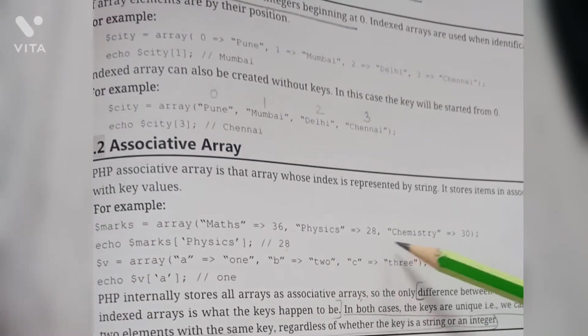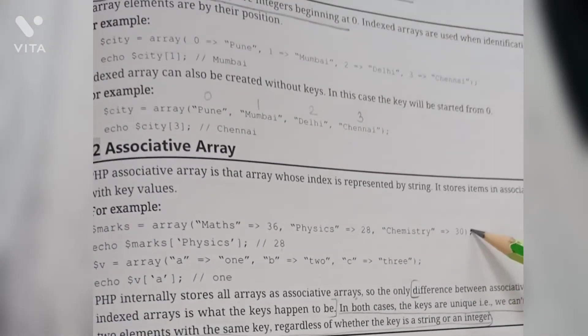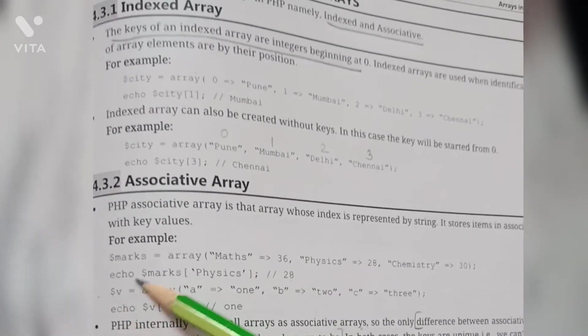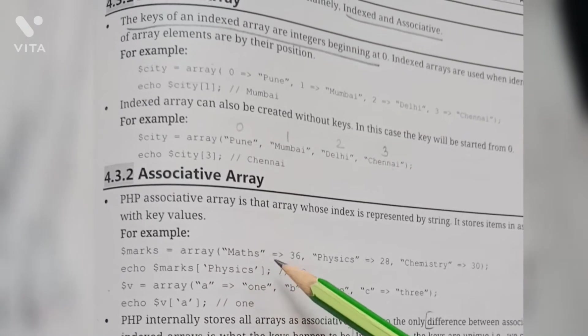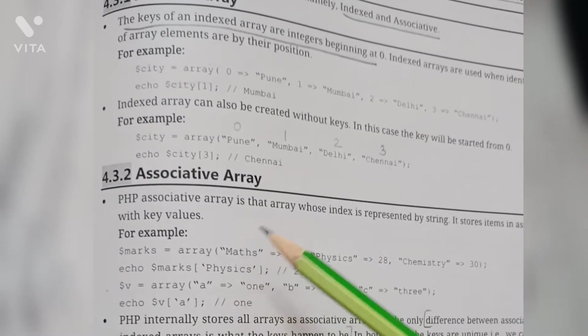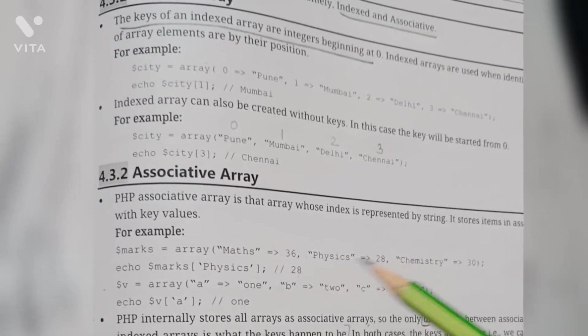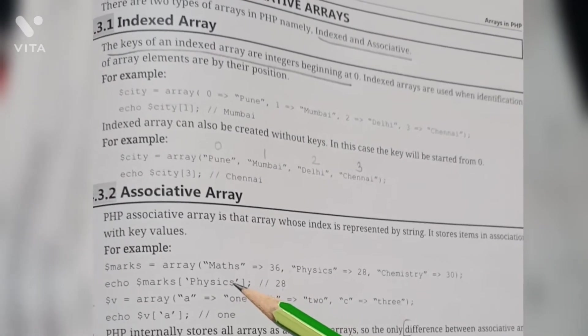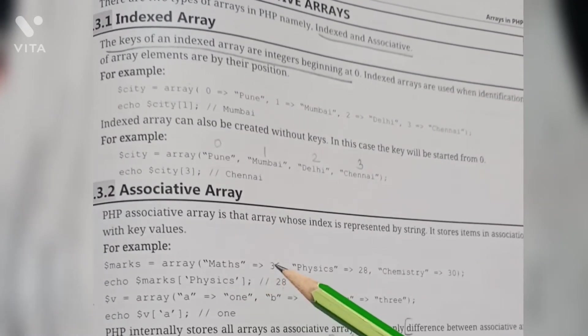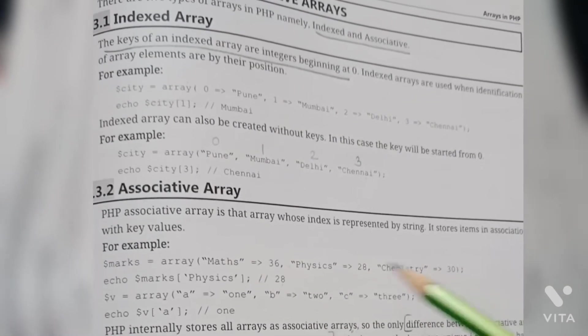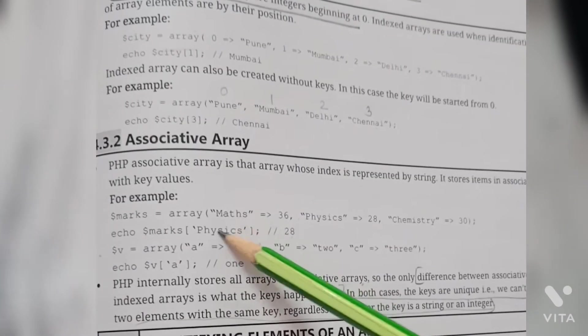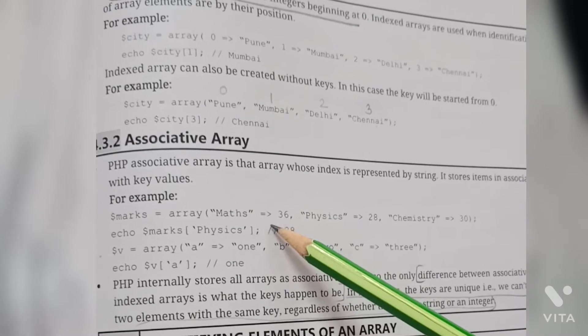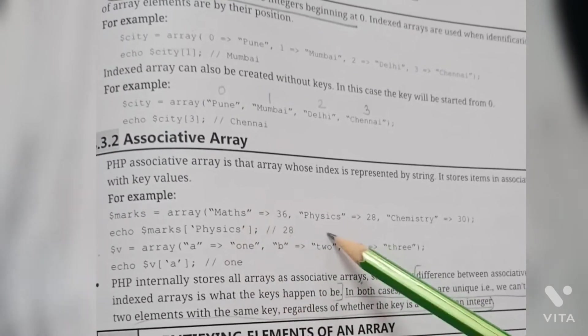Let's see the array here. The array contains elements one, two, three. Here maths, physics, chemistry - these three are key or index, and 36, 28, 30 - these three are values. The one which is to the left is called key or index. In this case it is math, physics and chemistry. Towards the right of the arrow, that is 36, 28 and 30 - these are called values.